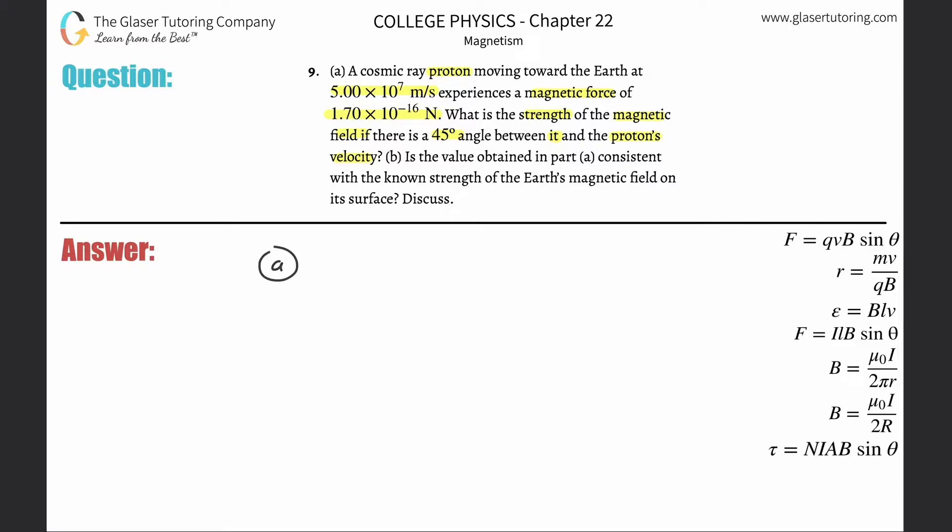Alright, so we have to know this formula that the force on a moving charged particle will equal the magnitude of that particle's charge multiplied by the velocity of that particle moving through the magnetic field, multiplied by the strength of that magnetic field, multiplied then by the sine of the angle between the velocity vector and the magnetic field.